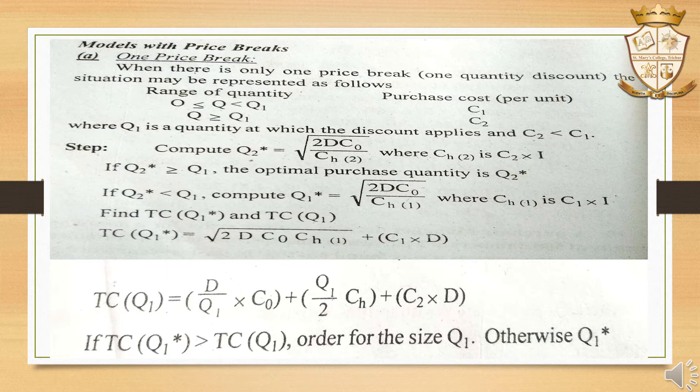For example, if we have below 500 units then one price applies, and above 500 units another price applies. In that case, we calculate the optimal quantity — the economic order quantity — which is equal to the root of 2D·CO divided by CH2, where CH2 is the holding cost.